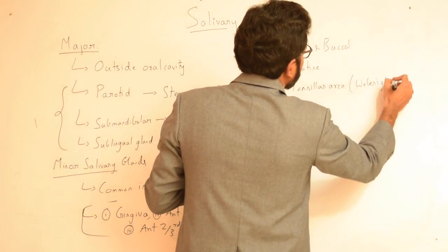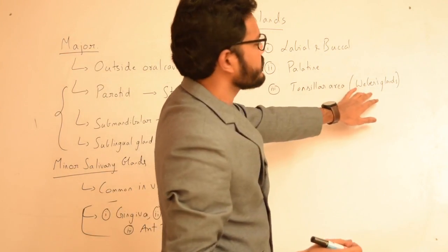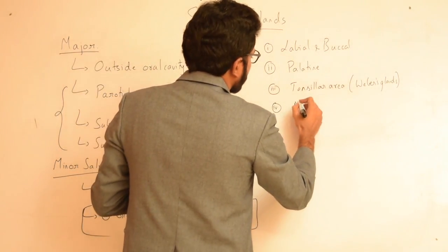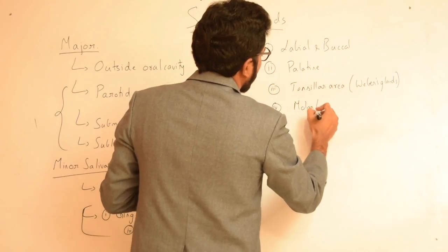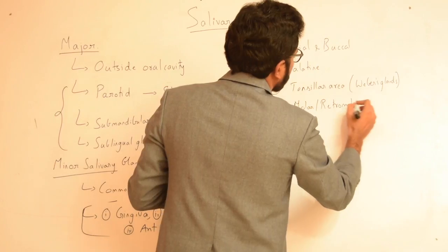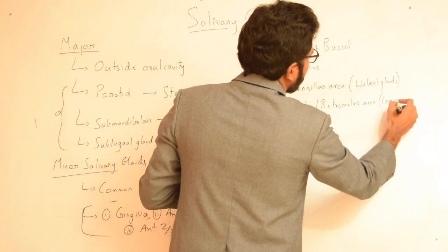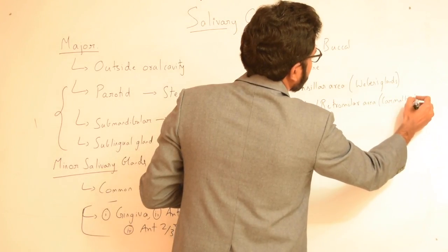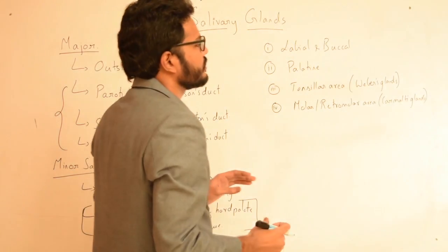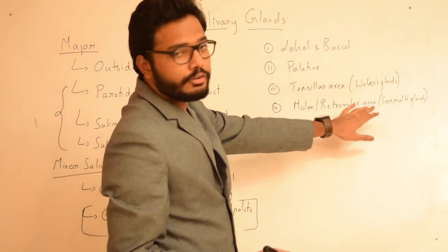The minor salivary glands present over the tonsillar area are called Weber's glands — that's very important. Minor salivary glands are also present over the molar or retromolar area, and these are called Carmalt's glands (C-A-R-M-A-L-T-S).